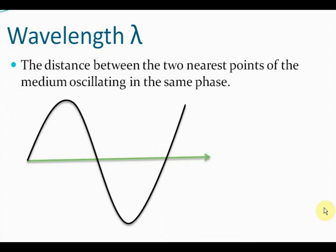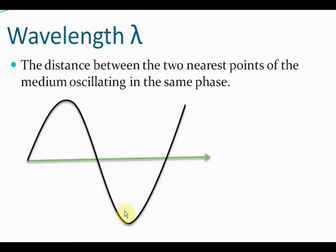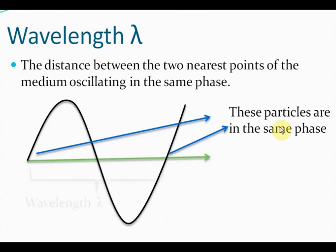Wavelength — we have all heard of this term. But what is it exactly in scientific terms? Wavelength is the distance between the two nearest points of the medium oscillating in the same phase. We talked about same-phase points earlier. The wavelength is the smallest distance between two points which are in the same phase. Another way of looking at wavelength: the shape of the wave keeps repeating again and again, and the length of one such wave shape is the wavelength, denoted by lambda.